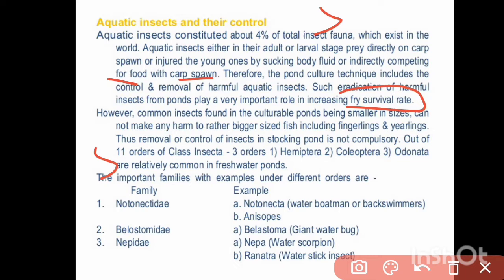However, common insects found in culturable ponds, being smaller in size, cannot cause any harm to rather bigger sized fish, including fingerlings and yearlings, because fingerlings and yearlings are large enough that common insects are not harmful to them.